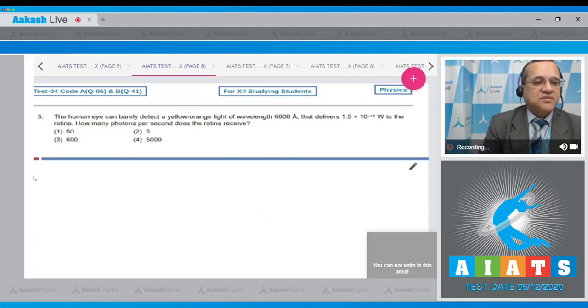Question number five says: The human eye can barely detect yellow-orange light of wavelength 6600 angstrom that delivers 1.5 times 10 to the power minus 18 watt to the retina. How many photons per second does the retina receive? The photon per second you have to find out. You know that power equals energy divided by time.